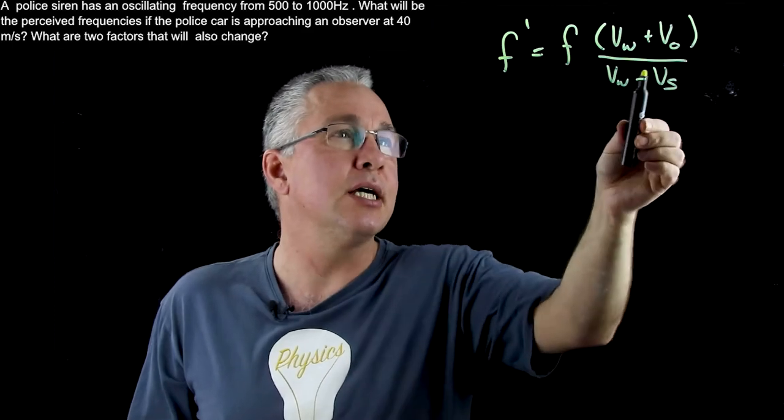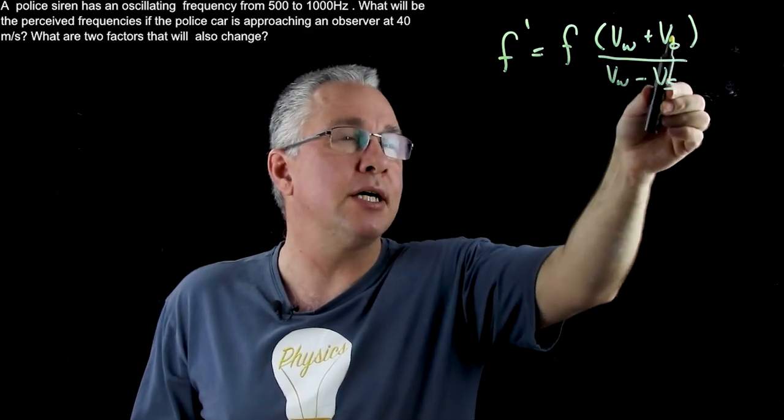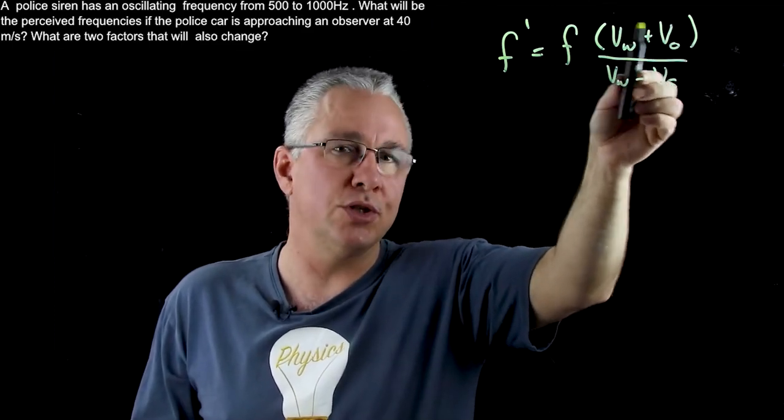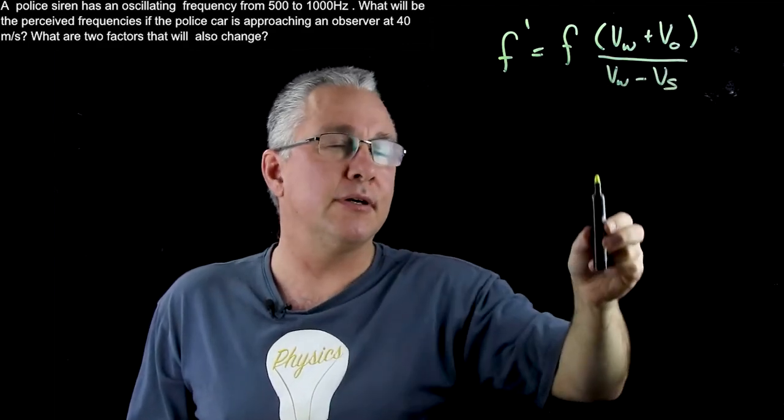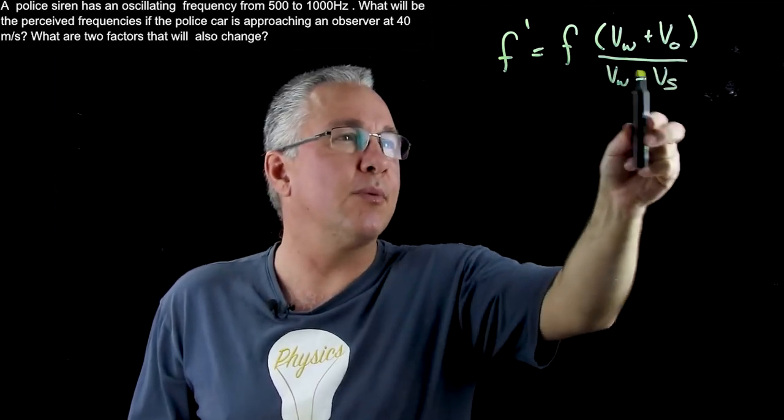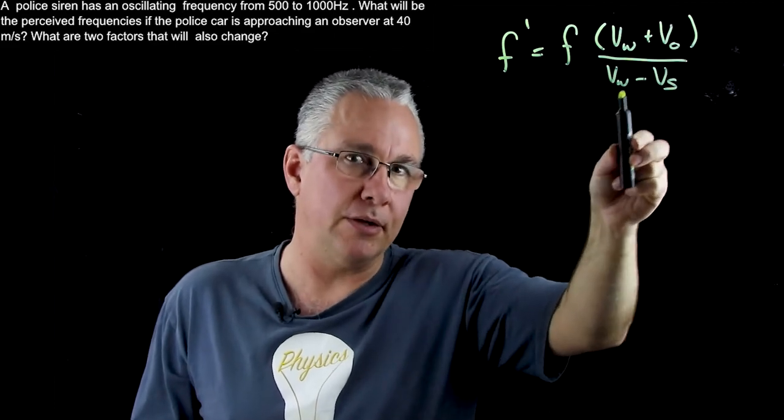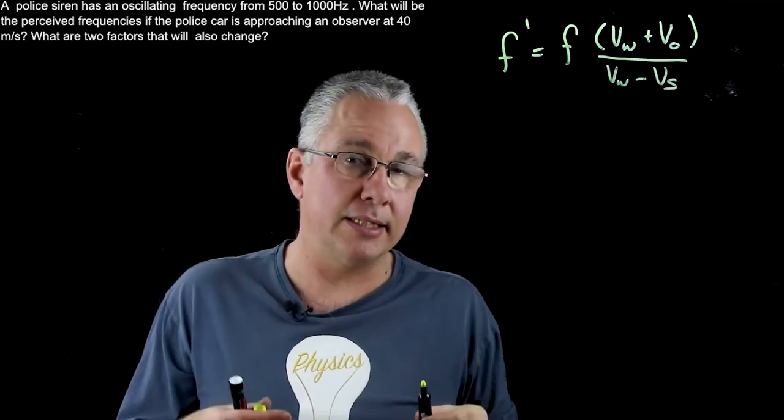In other words, we have an increase in frequency. So you can see that if the observer is moving towards the object then it's going to have a larger value over here. If the source is moving then we're going to have a smaller value here and both of those of course can take place.